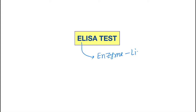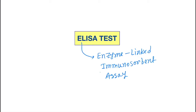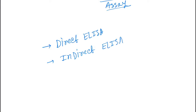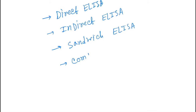Hello friends, today our topic is the ELISA test. ELISA stands for Enzyme-Linked Immunosorbent Assay. There are four types: the first one is Direct ELISA, next is Indirect ELISA, then Sandwich ELISA, and last is Competitive ELISA.